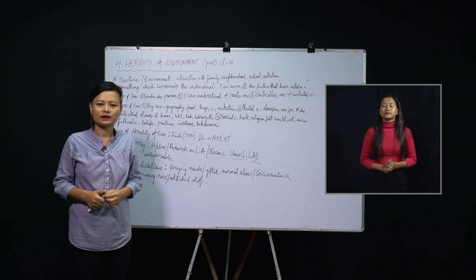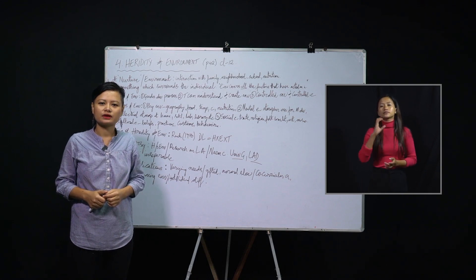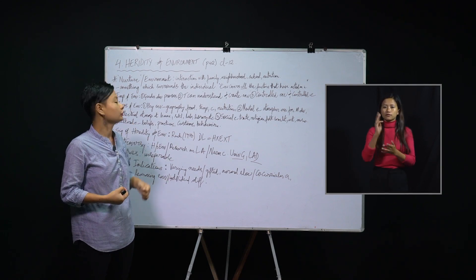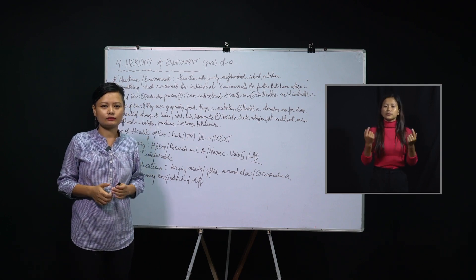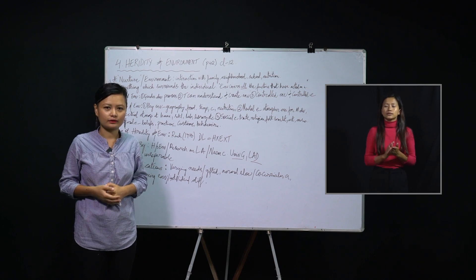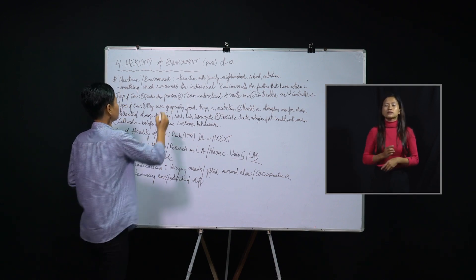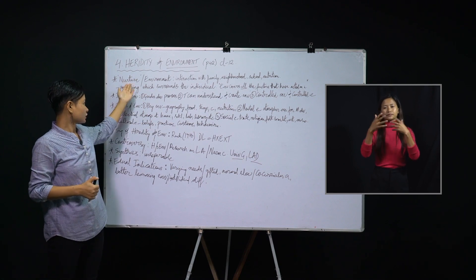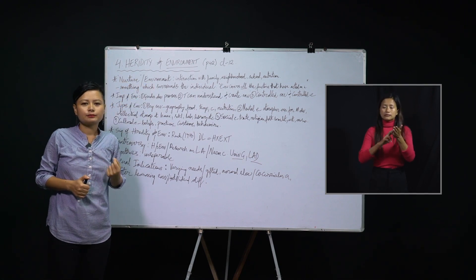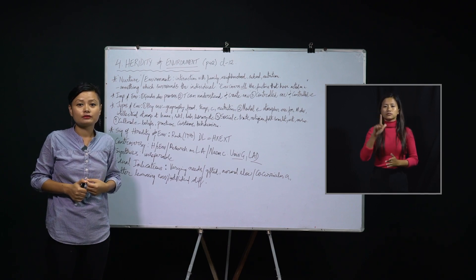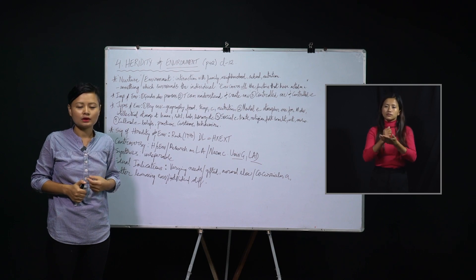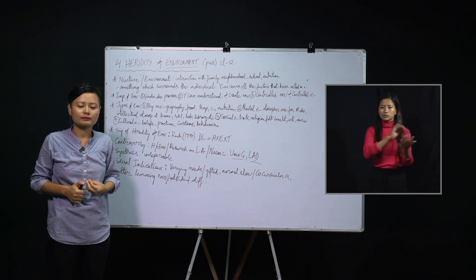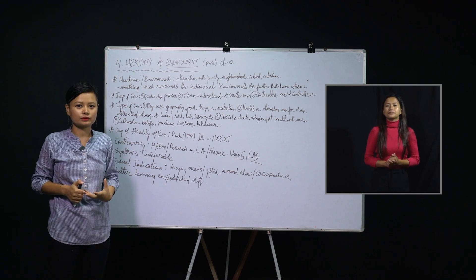Hello students, welcome back to another education class. We will be continuing with the previous lesson — the fourth chapter of your textbook: Hereditary and Environment. In the last class we dealt with what hereditary is. Hereditary is something we get as a gift from our parents; it is not our choice — as we are born into this world, we inherit certain things from our parents.